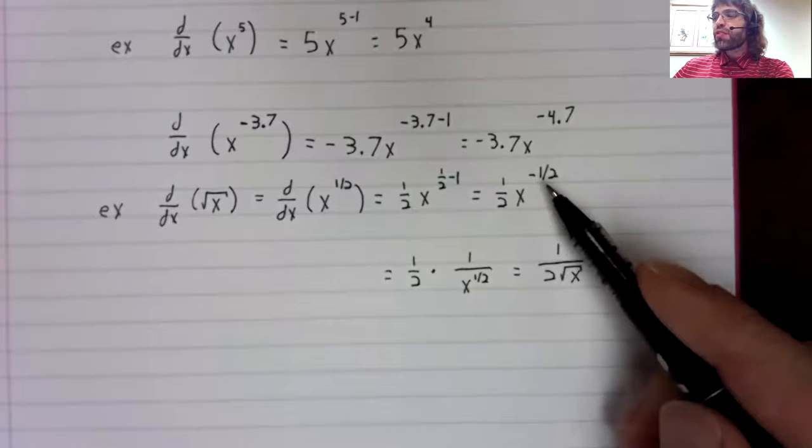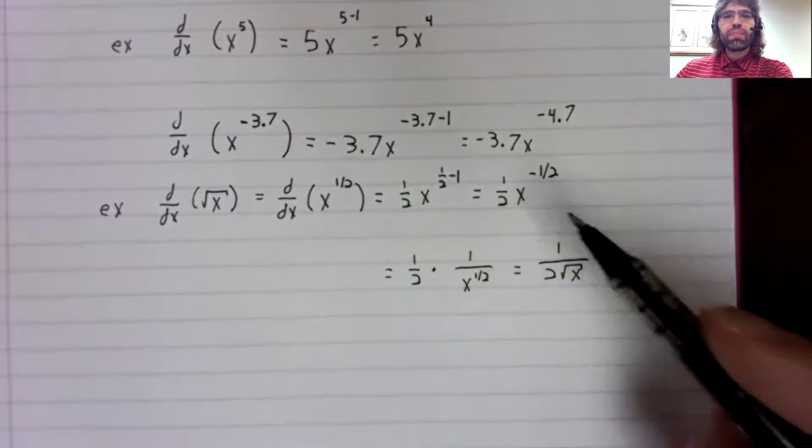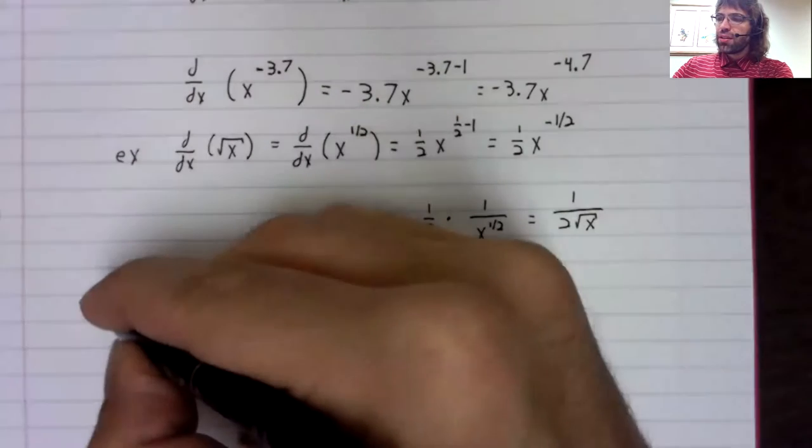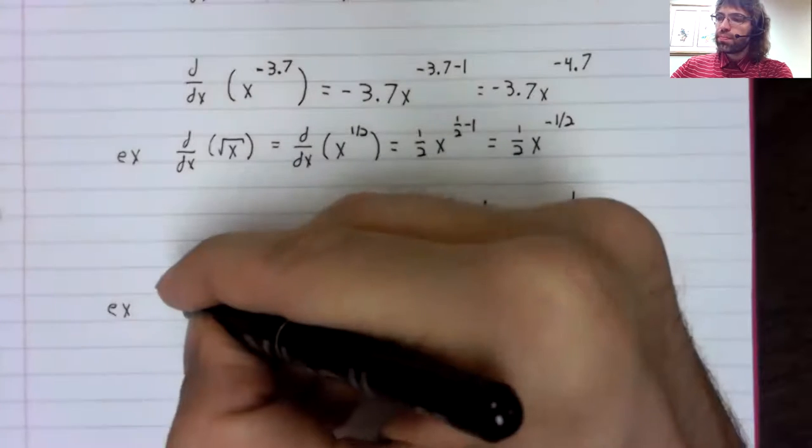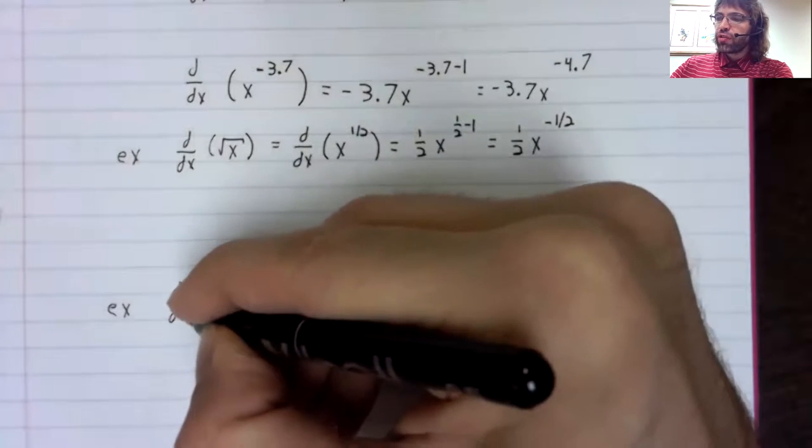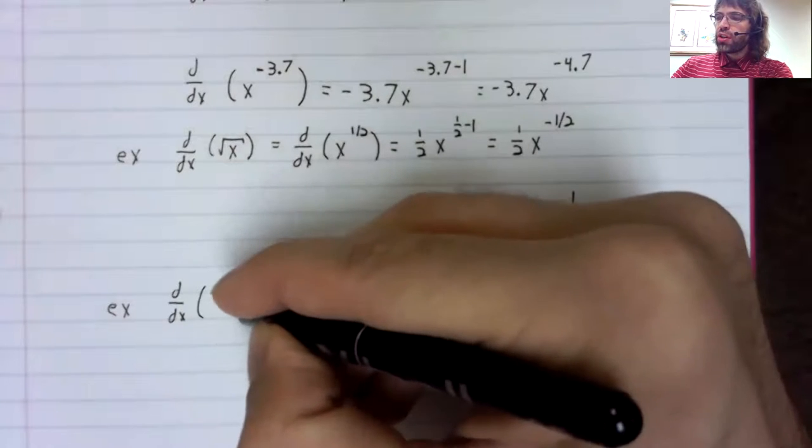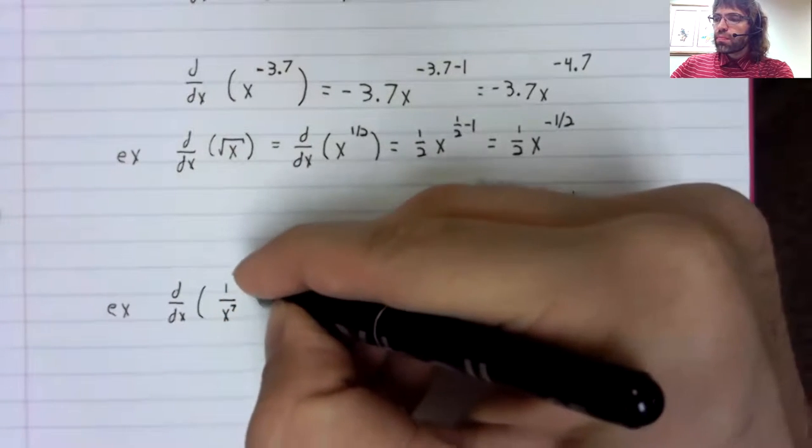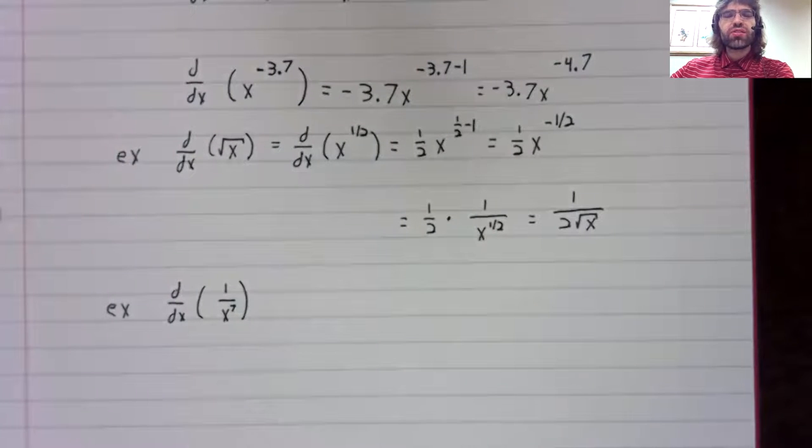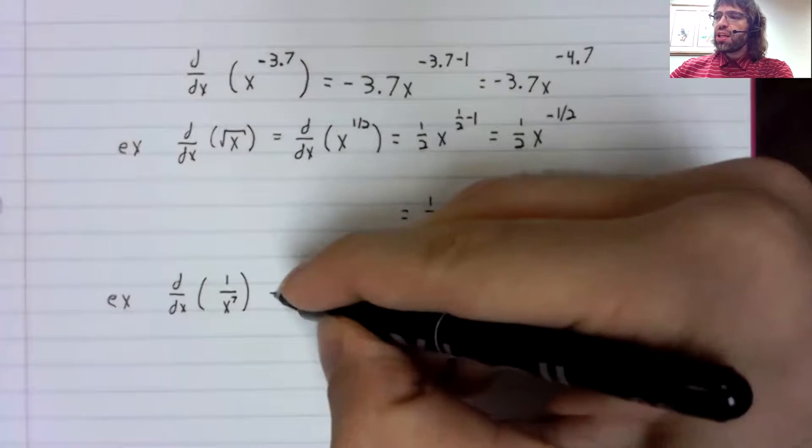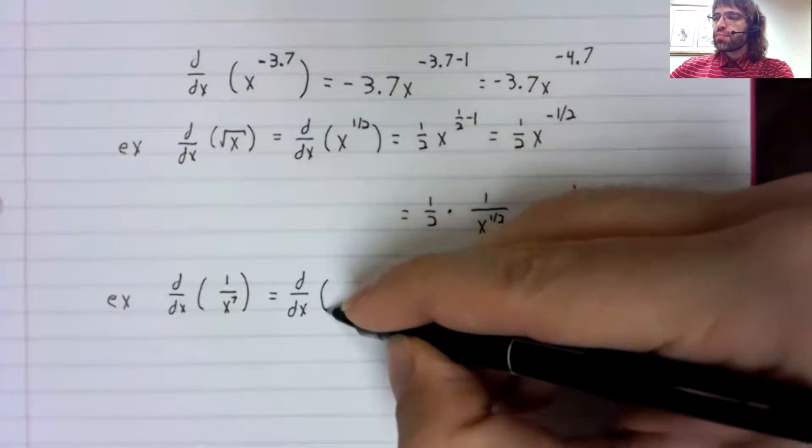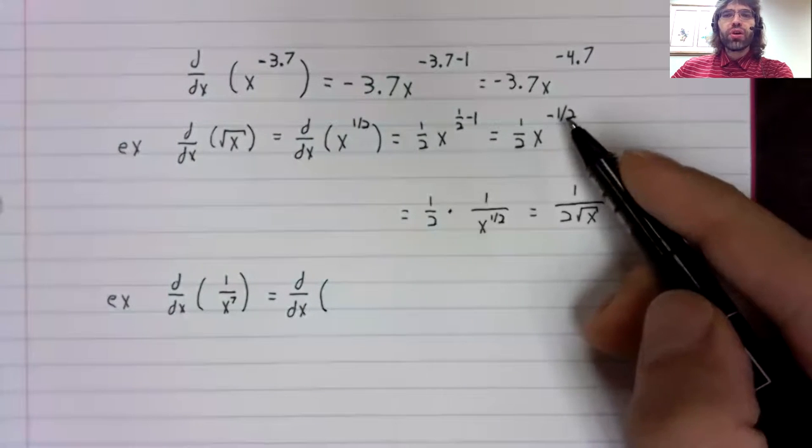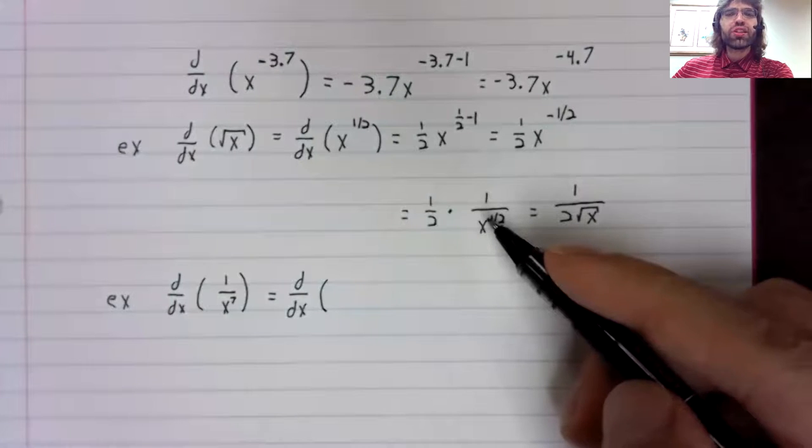Speaking of going from here to here and back again, let's do one more example. Let's differentiate one over x to the seventh power. We can do this if we remember the rule we use to go from here to here except in reverse. Having a positive power in the denominator is the same as having a negative power.